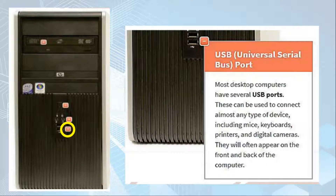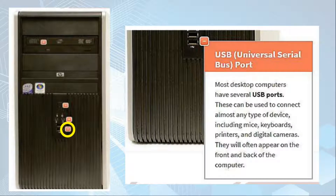We also have the USB or Universal Serial Bus port. Most desktop computers have several USB ports. This can be used to connect almost any type of device including mouse, keyboards, printers, and digital cameras. They often appear on the front and back of a computer. Usually, the front of the computer has two USB ports, but at the back there are more available ports.